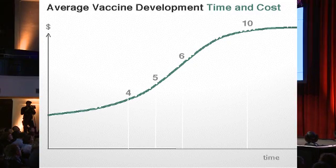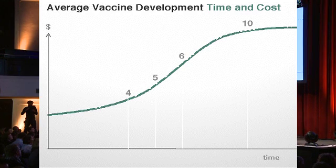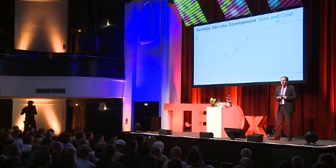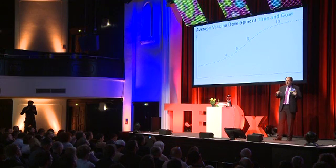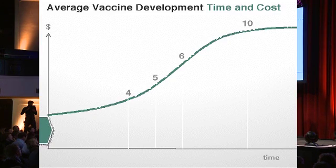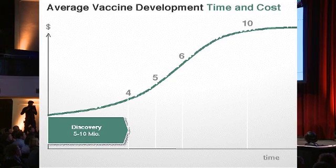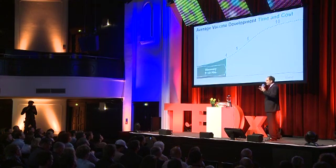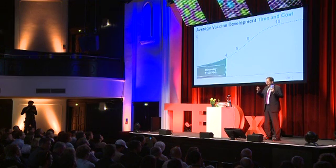But before I go there, I would like to briefly take you through the process of developing such a vaccine from both a time and cost standpoint. It all starts with research. You start to look for certain molecules that may be a basis for such a vaccine, and that takes somewhere between four or sometimes more years and costs anywhere up to about $10 million.